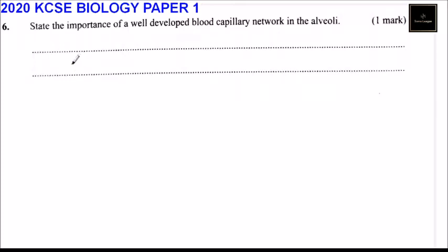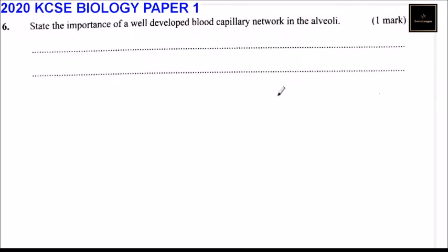Question number six, 2020 KCSE Biology Paper One: state the importance of a well-developed blood capillary network in the alveolus. First of all, we should ask ourselves: what is an alveolus? An alveolus is a tiny air sac in the lungs. Let's have a diagram for that.